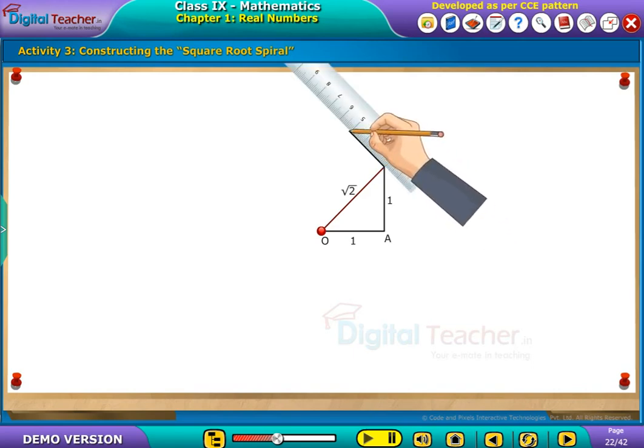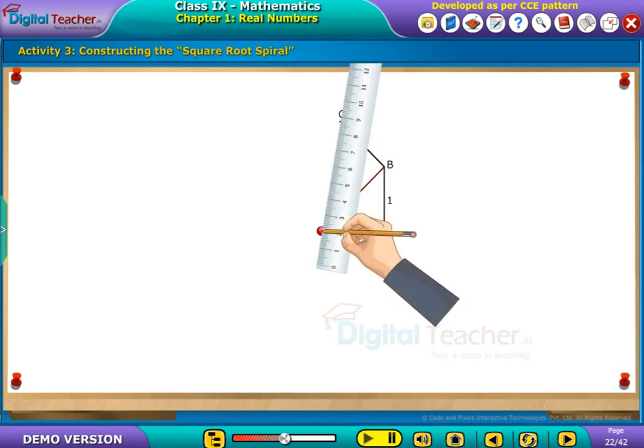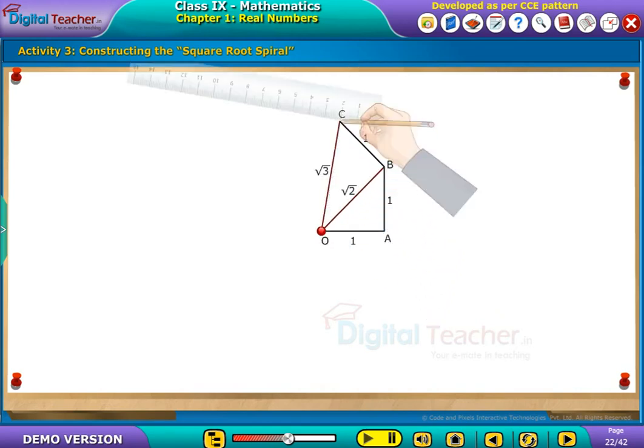Again, draw a line segment BC of unit length perpendicular to OB. Join OC where OC equals root 3. Draw a line segment CD of unit length perpendicular to OC.